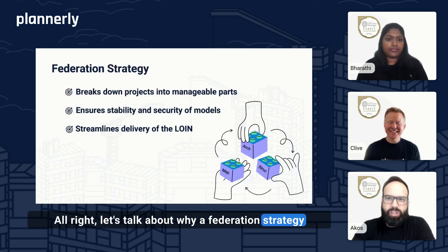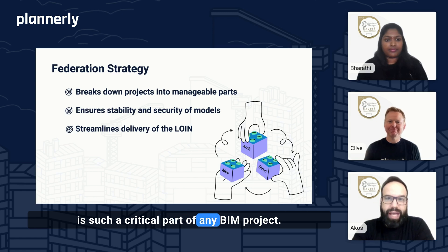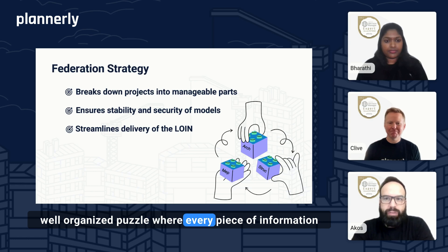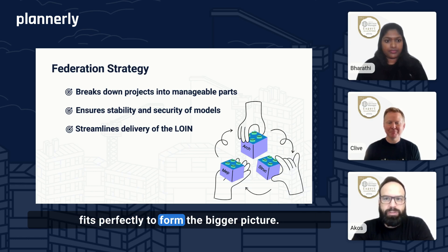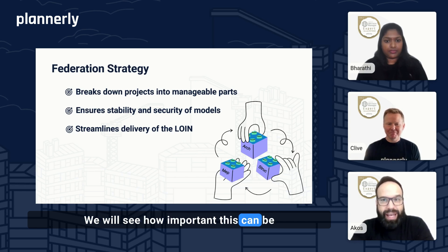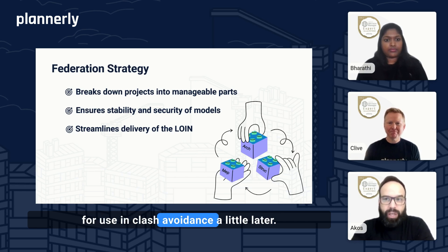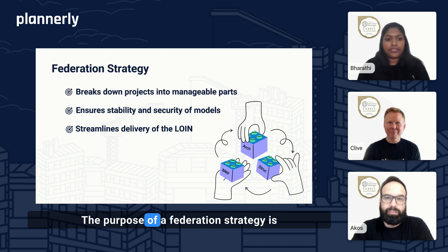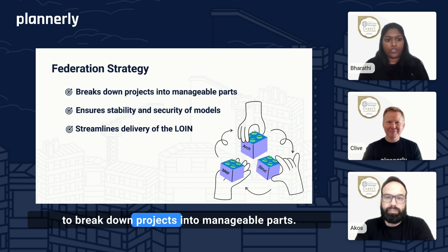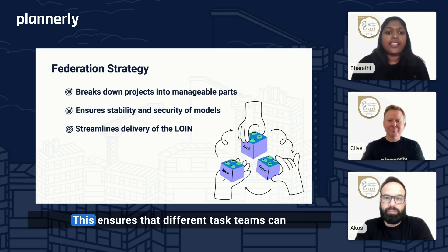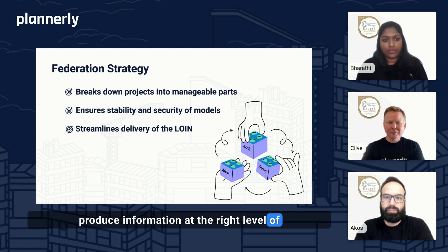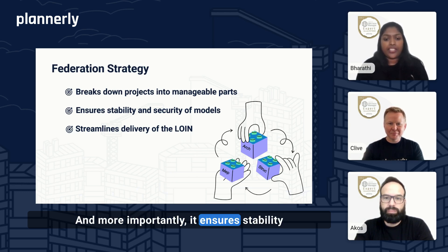Let's talk about why a federation strategy is such a critical part of any BIM project. At its core, it's like creating a well-organized puzzle where every piece of information fits perfectly to form the bigger picture. The purpose of a federation strategy is to break down projects into manageable parts, ensuring that different task teams can produce information at the right level of information need for each project stage, and more importantly, it ensures stability and security of the models.